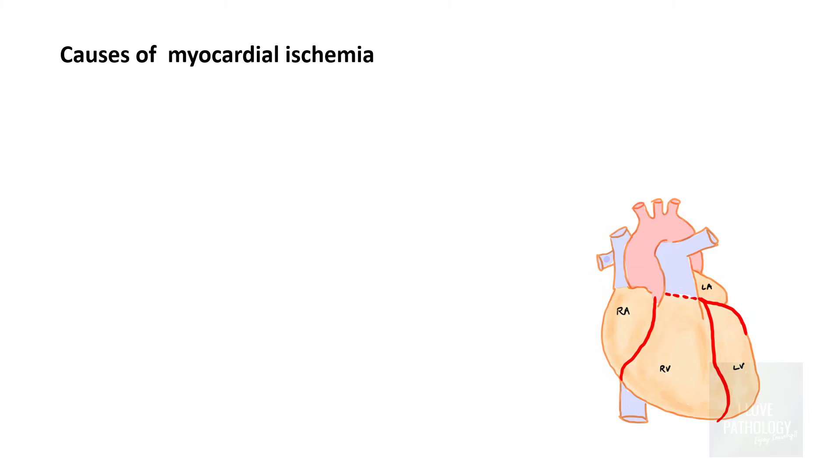Now, in the earlier session, we had discussed about the three important blood vessels, the three important coronary blood vessels which are implicated in the myocardial infarctions are the left and the right coronary artery. This is the right coronary artery, that is the left anterior descending coronary artery, and this is the left circumflex artery.